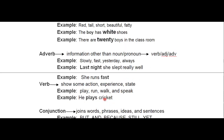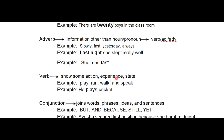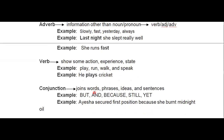Now verb — verb is a very important part of any sentence. Without a verb, a sentence is not complete. It shows some action, experience, or state. Examples: play, run, walk, speak. It is not very difficult to identify. For example: 'He plays cricket' — plays is the verb here, because playing means doing an action or work.